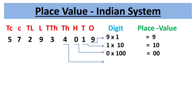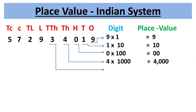The second period is thousands, consisting of two place values: thousands and ten-thousands. Place value of 4 is 4 × 1,000 = 4,000. Place value of 3 is 3 × 10,000 = 30,000.